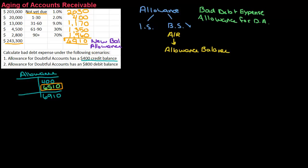So my journal entry is going to be bad debt expense and allowance for doubtful accounts. I'm going to just abbreviate that DA. I'm going to set up my debit and my credit. And so my debit is going to be this amount right here. $6,510. Because I need to credit the allowance account $6,510 to make this work. So there's my journal entry for that one. So that's scenario one.